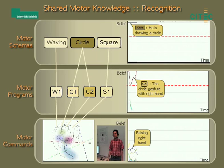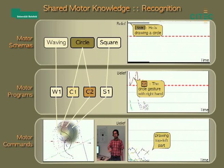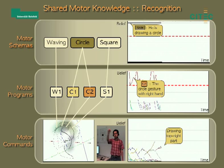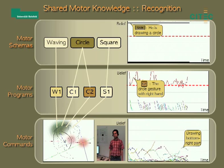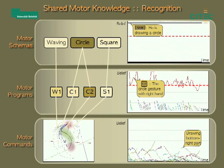Already during observation, the movement is compared to the agent's motor knowledge at the different levels. Structures found to be similar are activated probabilistically. In the example here, the motor program C2,